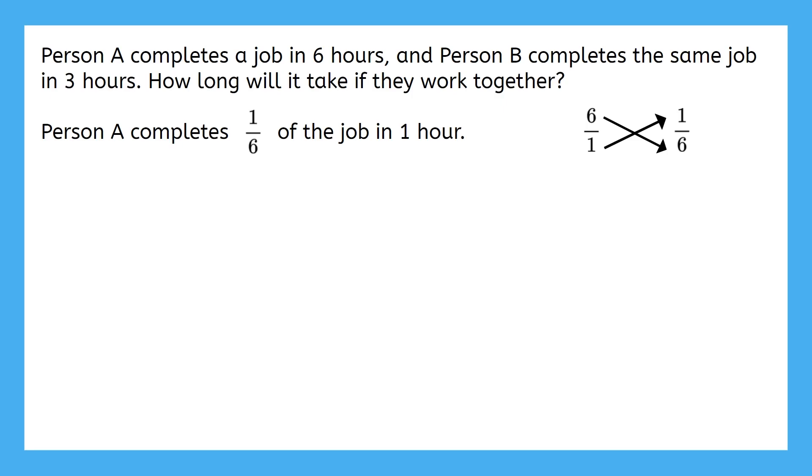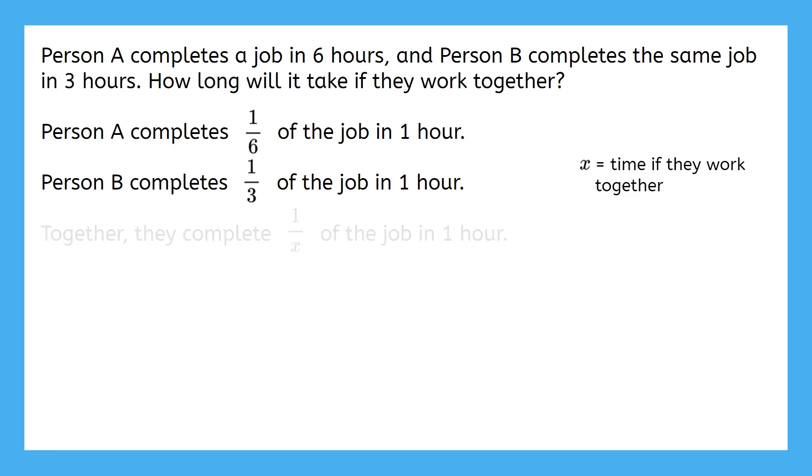And if person B can complete the job in three hours, then person B would complete one-third of the job in one hour, which is the reciprocal of three. We don't know how much time it takes if they work together yet, so this is going to be our unknown variable, x. And we again use the reciprocal to see what the hourly rate is.